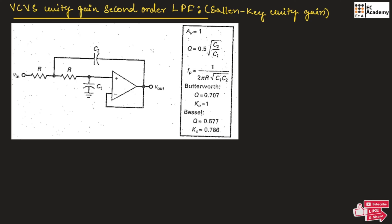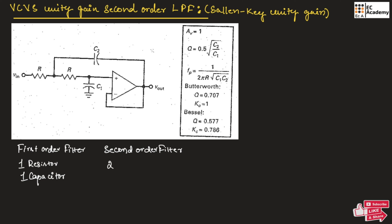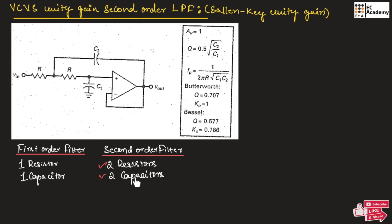This is a second order filter. In the previous lecture we understood about first order filter. The first order filter consists of 1 resistor and 1 capacitor, and the second order filter consists of 2 resistors and 2 capacitors. So to design a second order filter we need 2 resistors and 2 capacitors.